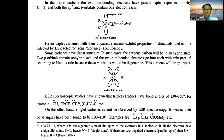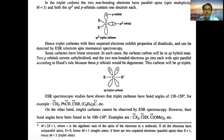Since both electrons have the same spin in these cases, both are triplet carbenes. Triplet carbenes can therefore have sp2 or sp hybridization. When sp hybridized, the structure should be linear, but the bond angle is not 180° because the non-bonding electrons cause some repulsion. ESR spectroscopy studies have shown that triplet carbenes have bond angles of about 130° to 150°.